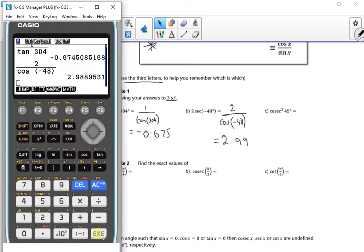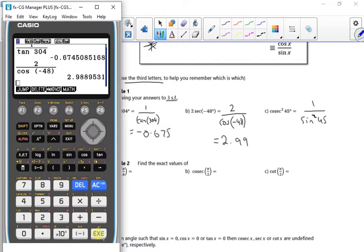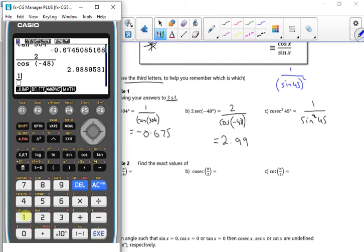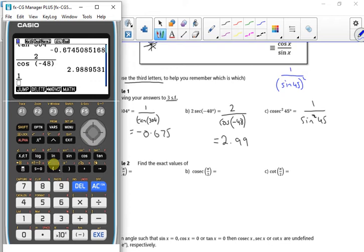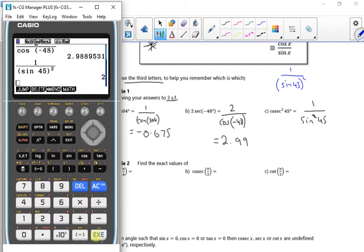And cosecant squared 45. In my calculator, I know that's going to be 1 over sin squared of 45, but actually in my calculator I have to do 1 over sin of 45, whole thing squared. So 1 over sin 45 squared gives me 2.